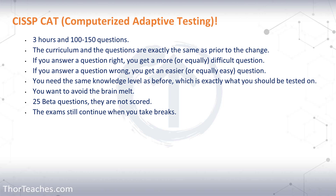With computerized adaptive testing, what that means is: if you answer a difficult question right, you get a question that is more difficult but also worth more points. If you answer a question wrong, you get a question that is easier but also worth less points. That continues all the way throughout the exam — right answer, harder question; wrong answer, easier question.